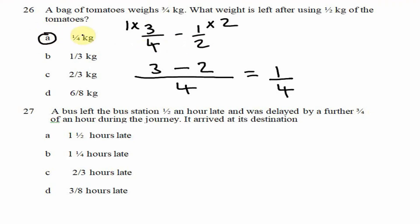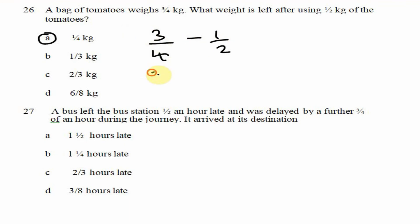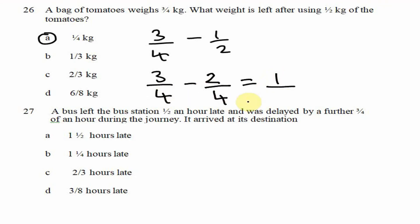I'll also demonstrate using the equivalent fraction method. We keep 3/4 and rewrite 1/2 as an equivalent fraction with denominator 4, which gives 2/4. Now that we have common denominators: 3 − 2 = 1, divided by the common denominator 4. We still get a quarter kilogram.